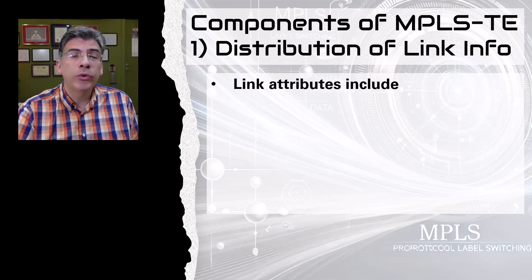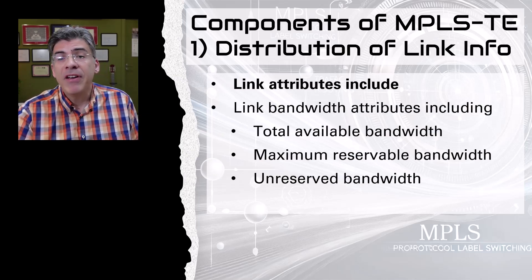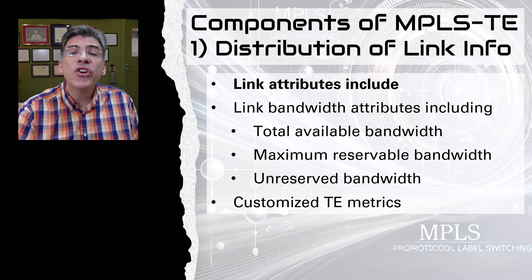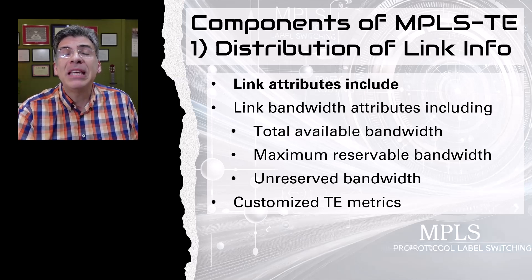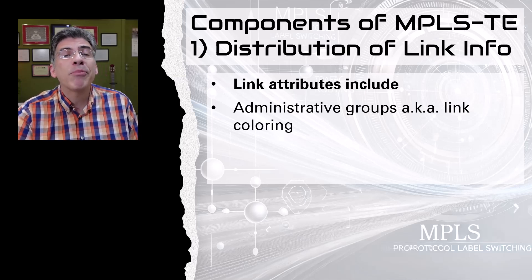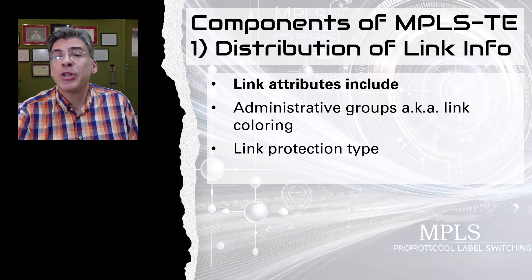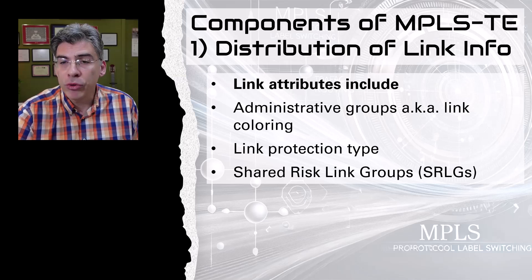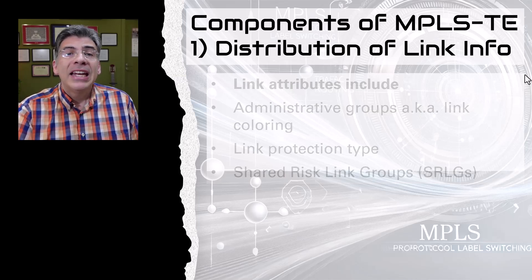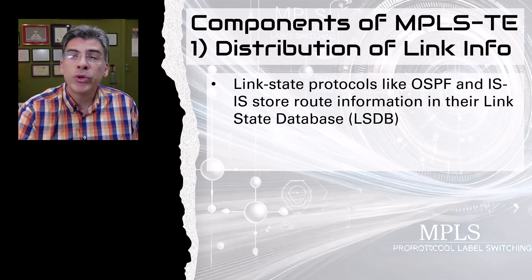These link attributes include bandwidth attributes such as total available bandwidth, maximum reservable bandwidth, and unreserved bandwidth. We also have customized TE metrics that are independent of traditional IGP metrics, administrative groups also known as link coloring which represent specific link characteristics, link protection types indicating if a link is protected by mechanisms such as fast reroute, and shared risk link groups or SRLGs, which identify shared failure domains for TE planning.